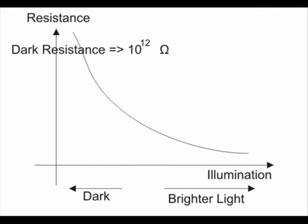It can be as high as 10 to the power of 12 ohms, and if the device is allowed to absorb light, its resistance will be decreased drastically. If a constant voltage is applied to it and intensity of light is increased, the current starts increasing.